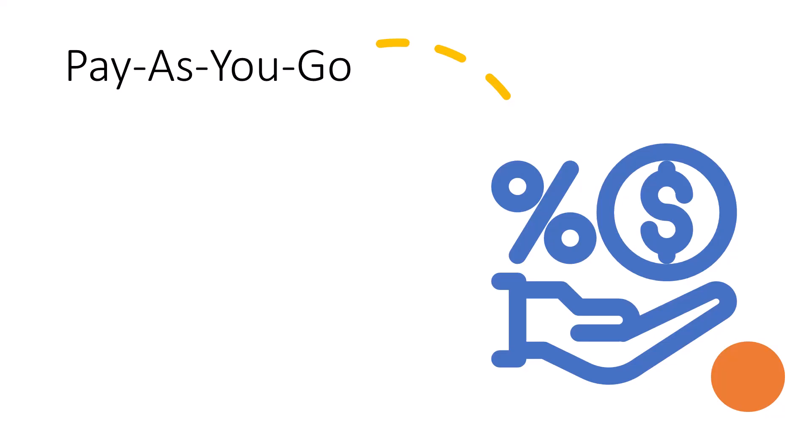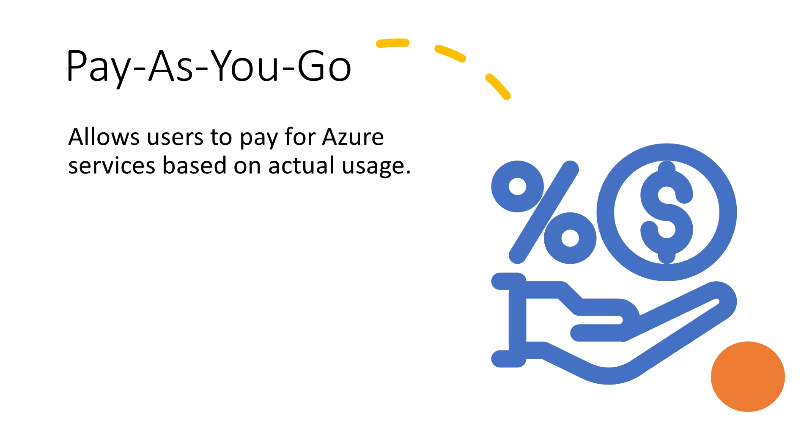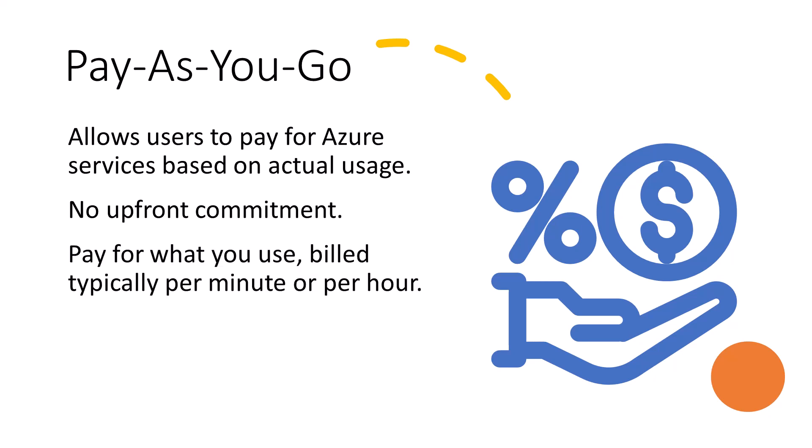The pay-as-you-go model is a flexible option that allows users to pay for Azure services based on actual usage. This comes with no upfront commitment. You only pay for what you use, and you're typically billed per minute or per hour, depending on the resource. Pay-as-you-go offers tons of flexibility and allows you to start or stop using services at any time, with no need for long-term commitment, adapting to ever-changing business needs.